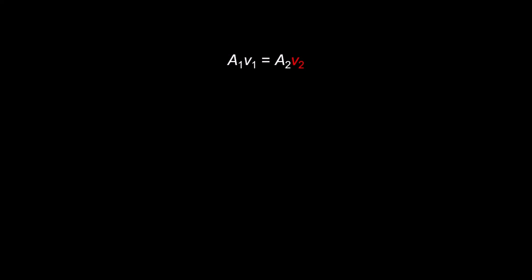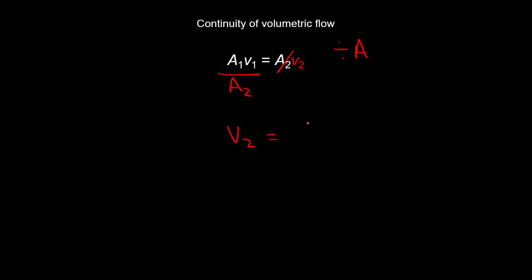This is the continuity of volumetric flow formula, which is about fluids. We've got A1 times V1 equals A2 times V2 — area times velocity equals area times velocity. I want to find V2, the second velocity. A2 is multiplying V2, so I do the opposite and divide by A2. That cancels, giving V2 equals A1 times V1 divided by A2.